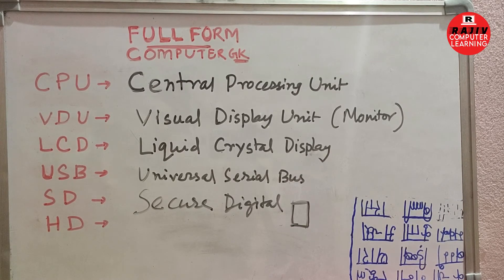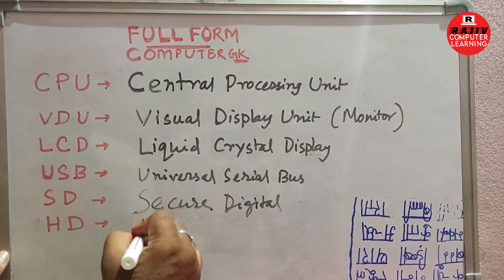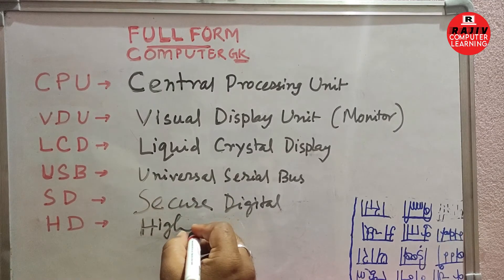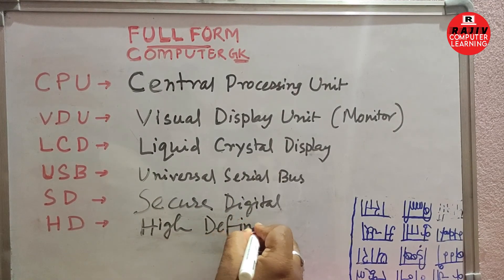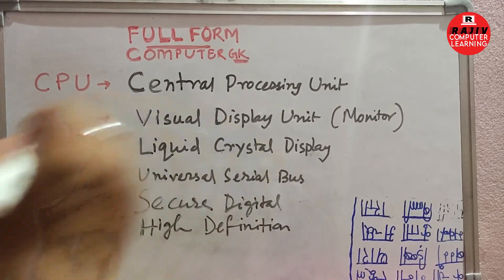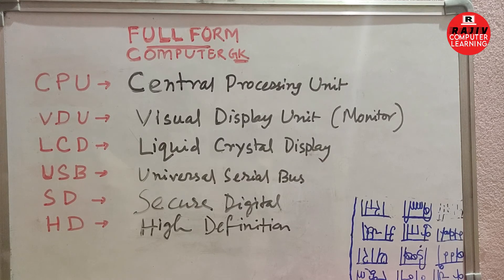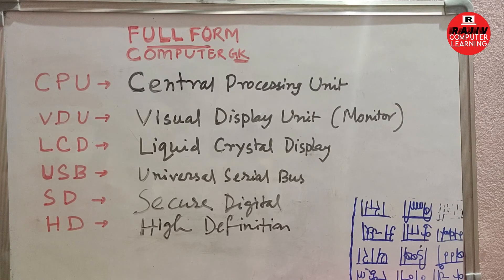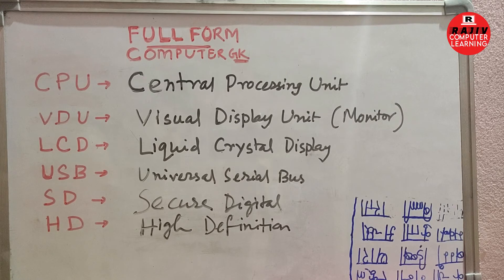HD stands for High Definition. HD is a resolution type — it means the TV or monitor has high definition resolution, so its picture clarity is better than normal picture quality and the pixel density is very high. Just remember: HD picture means a very high quality picture.